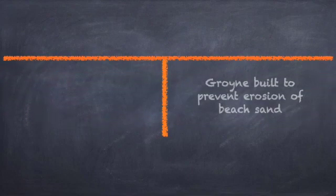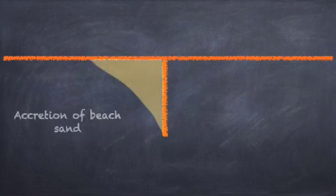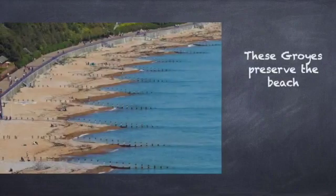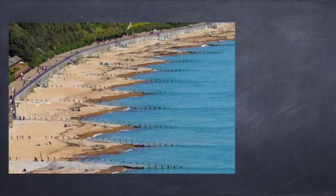So what do they then do to prevent this from happening? You build a groin, a structure that goes right out into the water. Then can you see what happens? There's an accretion of sand. Here we see an actual picture of what this looks like. There you see the groins built out into the water, and then there's a buildup of sand to preserve the beach.